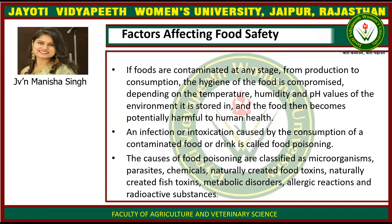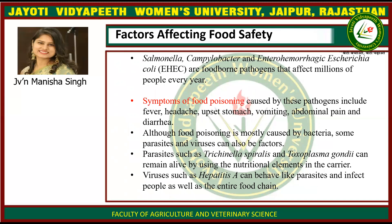An infection or intoxication caused by the consumption of contaminated food or drink is called food poisoning. The causes of food poisoning are classified as microorganisms, parasites, chemicals, naturally created food toxins, naturally created fish toxins, metabolic disorders, allergic reactions, and radioactive substances. Salmonella, Campylobacter, and enterohemorrhagic E. coli are foodborne pathogens that affect millions of people every year.